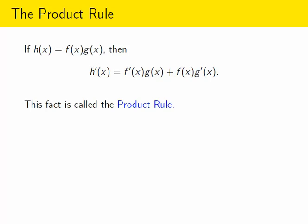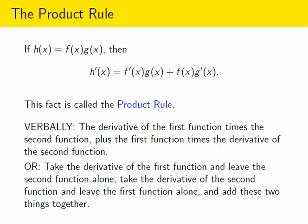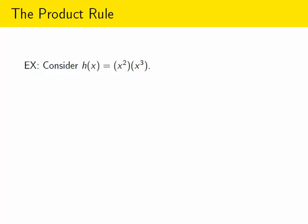This fact is called the product rule, and it's not as complicated as it might seem at first. Instead of trying to memorize the formula symbols, you'll probably be able to remember this better if you think of it verbally: you take the derivative of the first function and multiply that by the second function, then you take the first function and multiply that by the derivative of the second function, and then you add those two together. You might want to freeze this screen and read these to yourself to see which verbal form makes it easier for you to remember. Find a way to remember this formula so that you can use it, because it's very important.